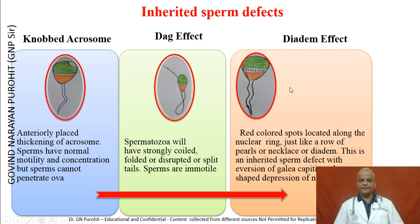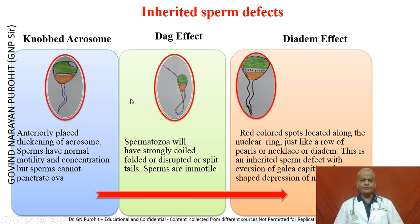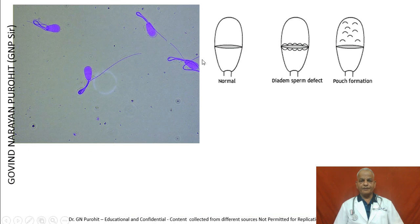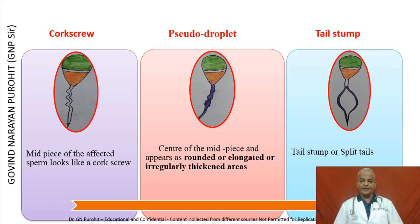The Diadem defect shows red color spots located along the nuclear ring, just like a row of pearls, a necklace, or a diadem. It is an inherited sperm defect with eversion of the galea capitis and pouch-shaped depression in the nucleus. Pictures show the DAG defect with coiled midpiece and tails, a normal sperm, a sperm with diadem defect, and pouch formation. The corkscrew defect makes the midpiece appear like a corkscrew. The pseudo droplet appears as a rounded, elongated, or irregularly thickened mass at the center of the midpiece. Tail stump or split tails is another defect in which the sperm cannot fertilize the ova.